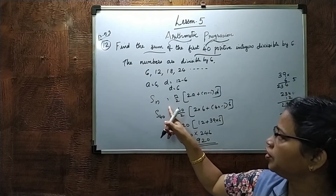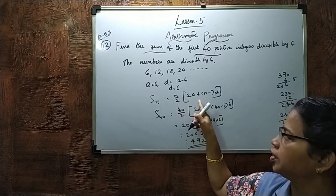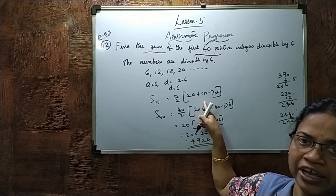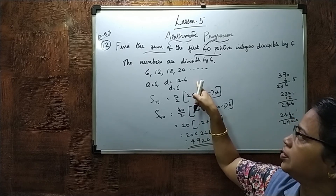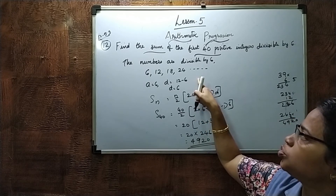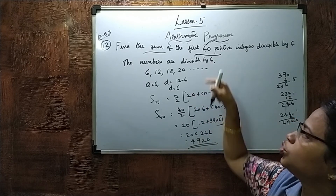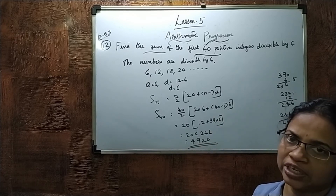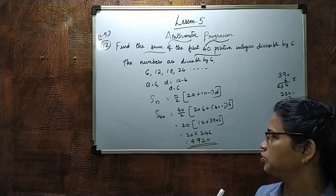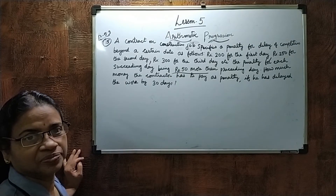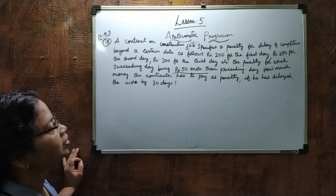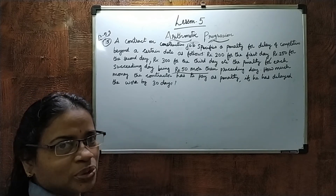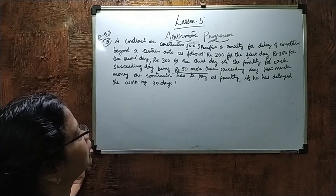If you want to use the other formula, N by 2 into A plus An, you would need to find A40 first, but you will get the same answer of 4920.